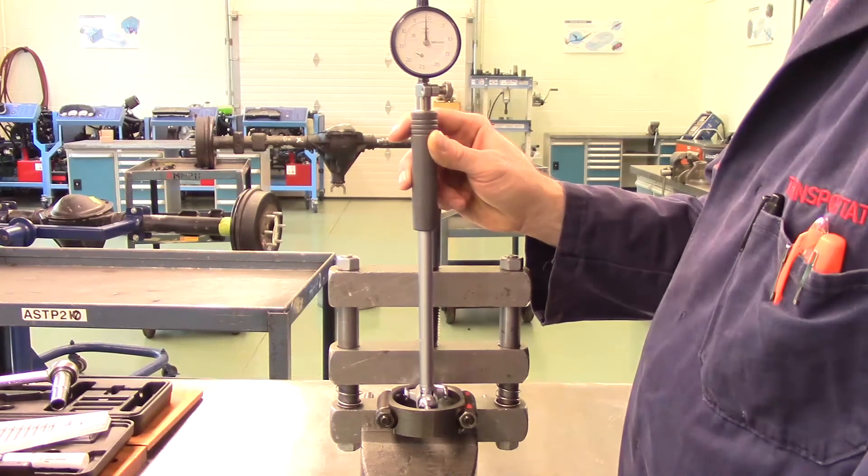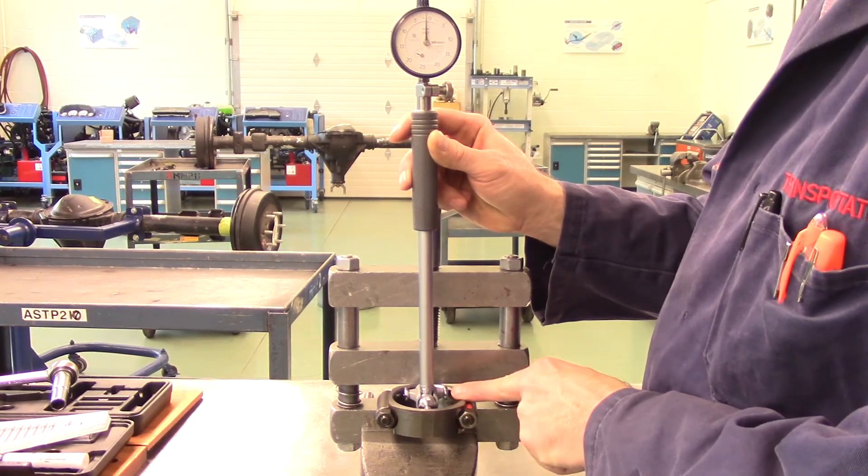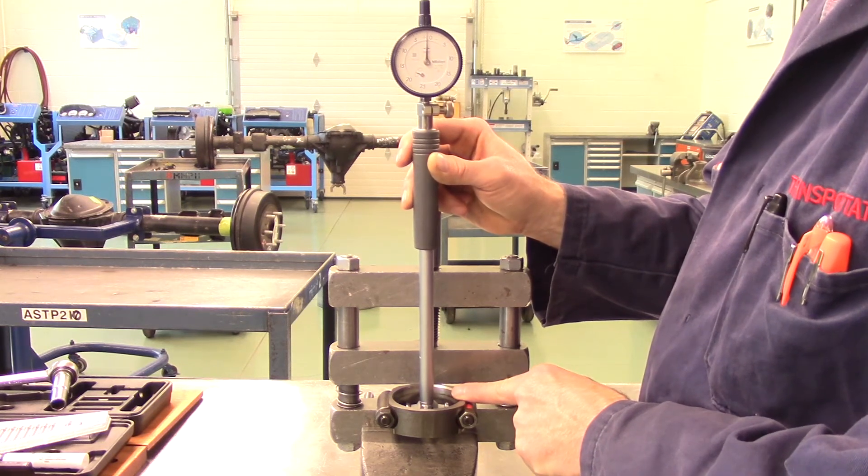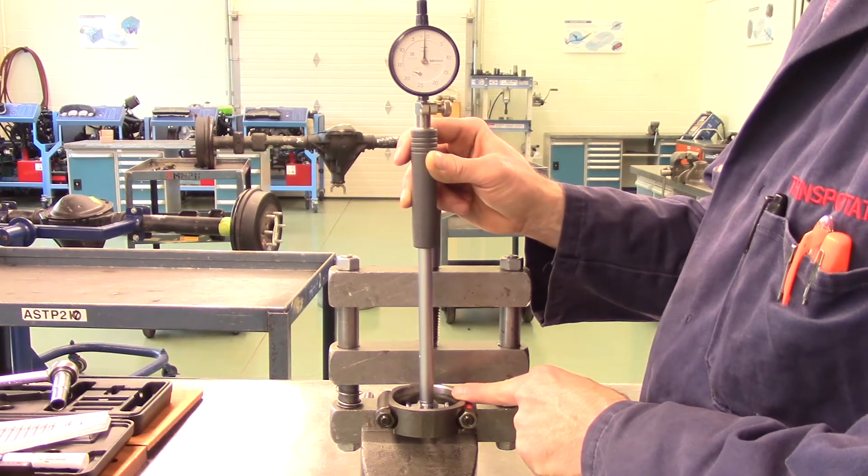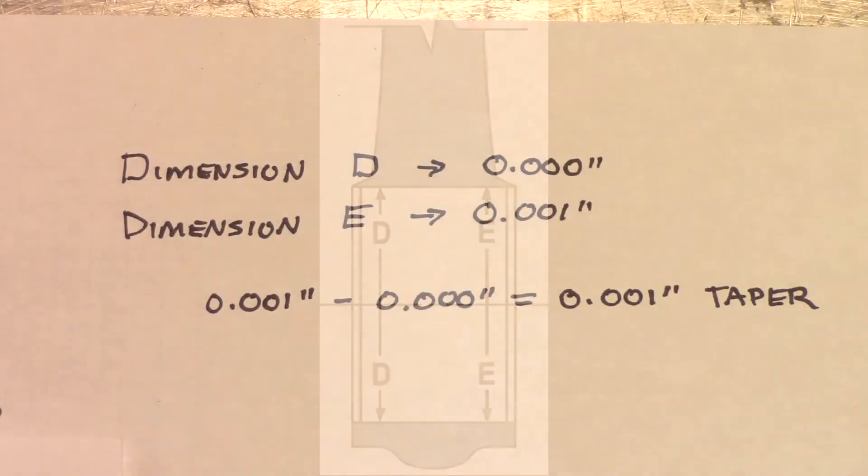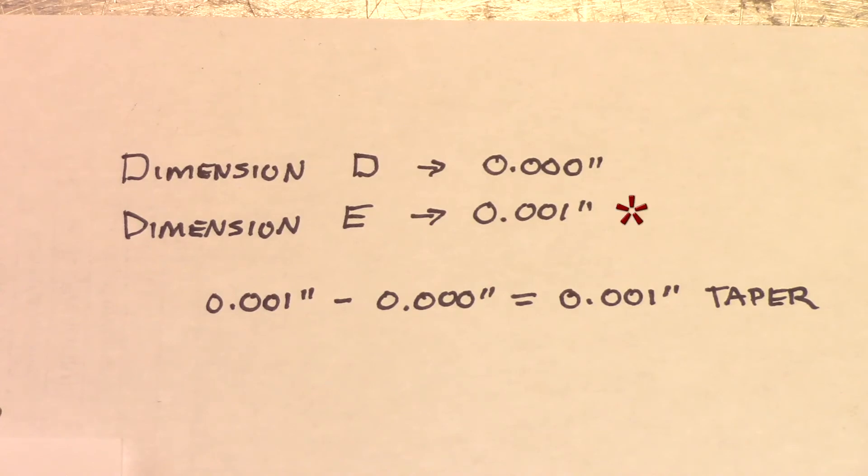For measuring taper, we will make measurements from a point at the front of the bore and compare that to a measurement taken at the back of the bore, as indicated in this diagram. Record your results. In this example, our two readings were zero and one thousandths of an inch. The difference between the smallest and largest measurement is one thousandths of an inch. This bore has one thousandths of an inch of taper.